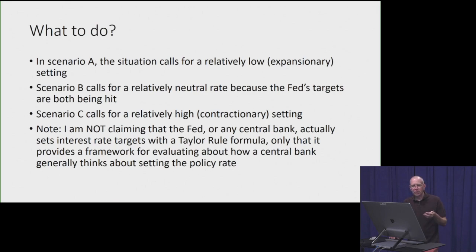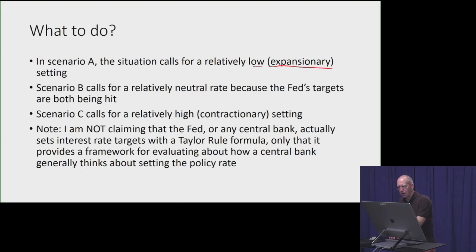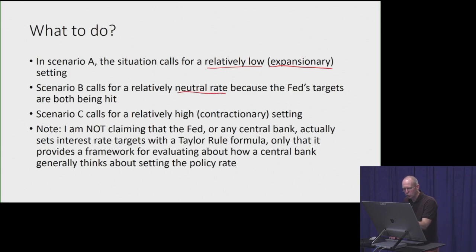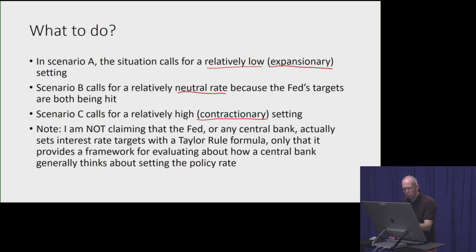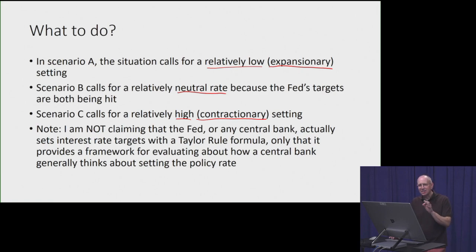Now that we have a visualization of the three scenarios, we can use the Taylor rule to think about how the Fed or any central bank might set its short-term policy interest rate. In Scenario A — a weak economy with inflation and GDP below target — we'd call for relatively expansionary monetary policy, measured by a relatively low target rate. In Scenario B, everything is on target, so we'd want a relatively neutral rate. In Scenario C, the economy is overheating, so we'd want a relatively contractionary setting — relatively high short-term interest rates. Note that central banks, including the Fed, don't actually use the Taylor rule to set their target rates, but it's a very helpful conceptual framework.